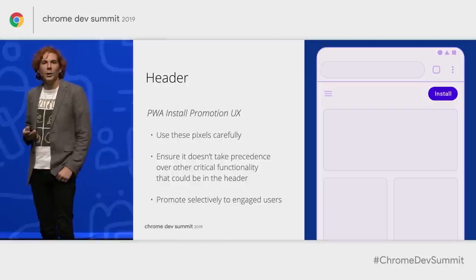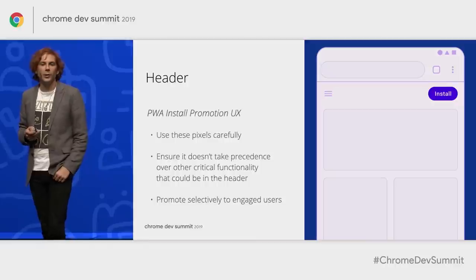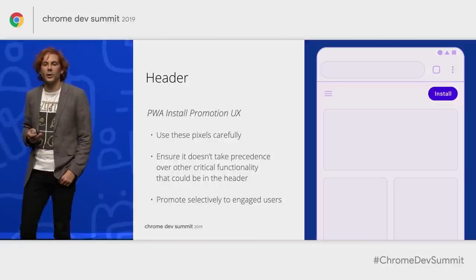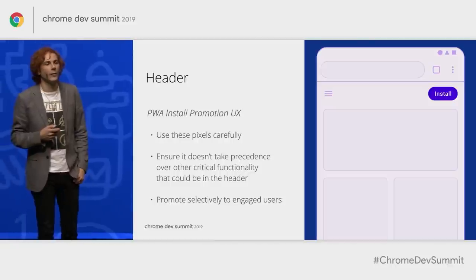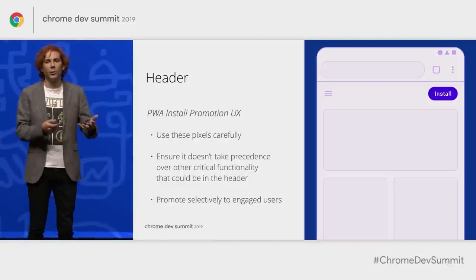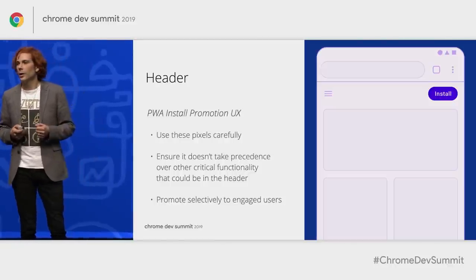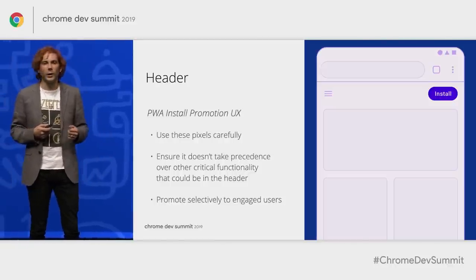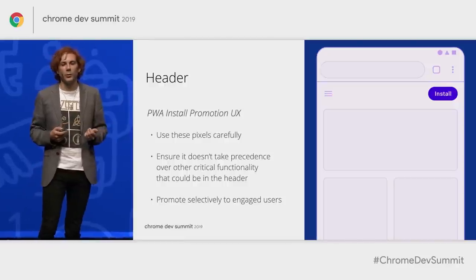You may want to use an icon instead of text to make the action button a little bit smaller. You might also want to consider selectively promoting only to users who have engaged with you — for example, only showing it to signed-in users who clearly have an interest in the product or service you're offering.